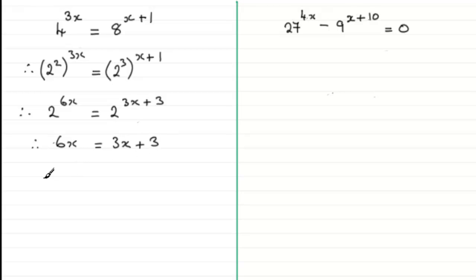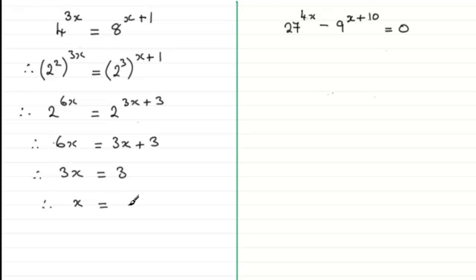Therefore we have 6x equals 3x plus 3. If we solve this by subtracting 3x from both sides, we have 6x take away 3x which is 3x, and that leaves us with 3. Divide both sides by 3 and you end up with x equals 3 divided by 3, which is 1.